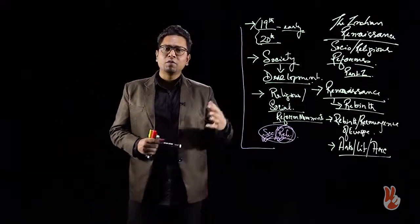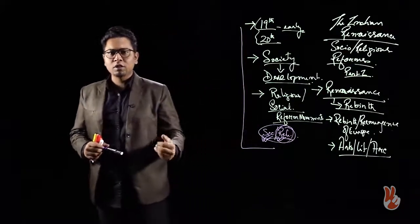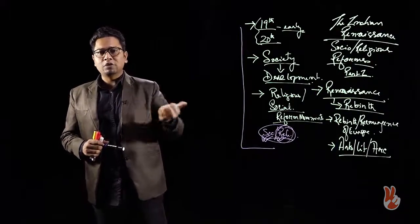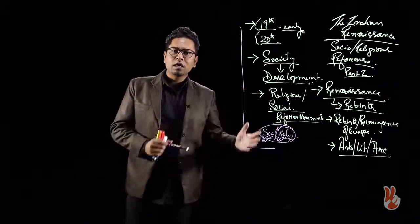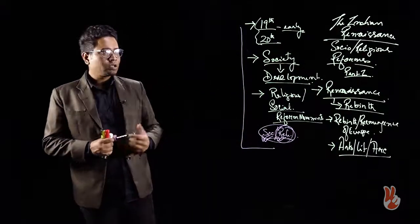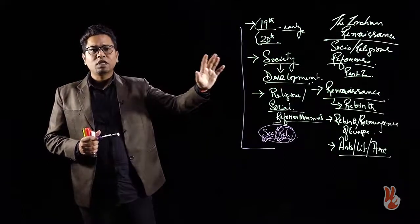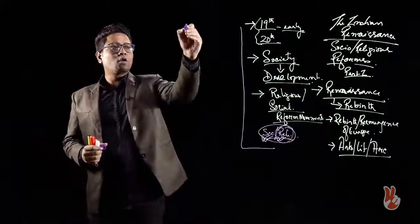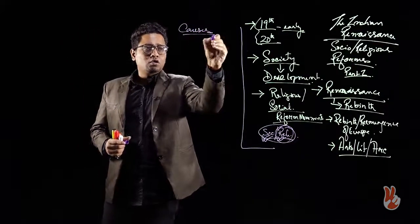We have covered the literary aspect when we talked about vernacular literature, where there is a special section discussing the different kinds of literature associated with the socio-religious reformers — you can check out that portion from our videos. Now let us go into certain aspects of the Indian Renaissance. The first aspect to talk about is the causes of its emergence.